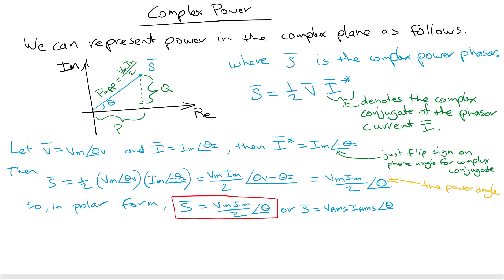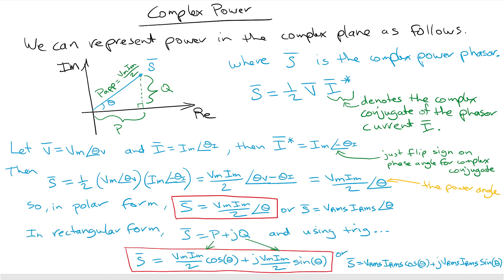Converting the complex power phasor to rectangular form using trigonometry, the real part is Vm·Im divided by 2 times cosine theta, and the imaginary part is Vm·Im divided by 2 times sine theta. The same representation holds when using RMS voltages.